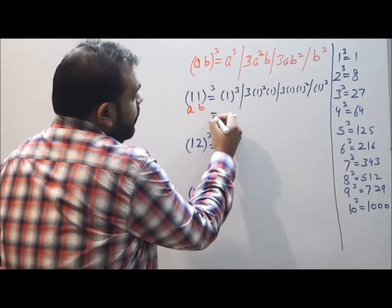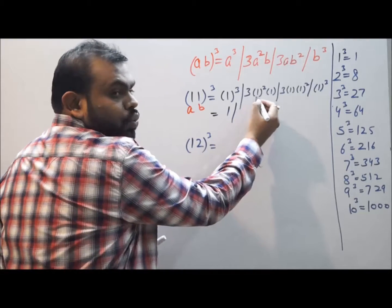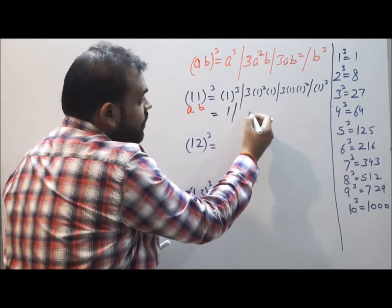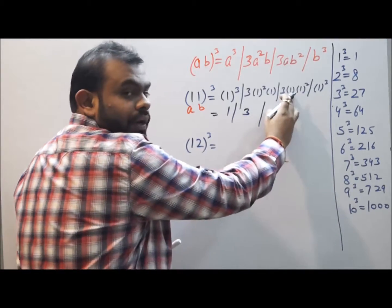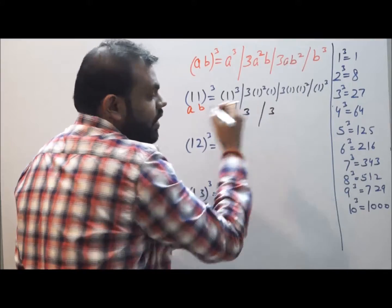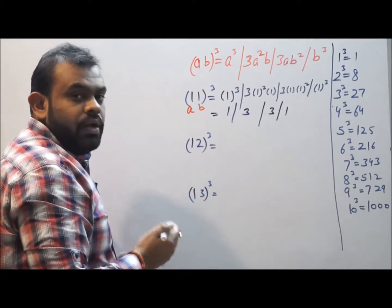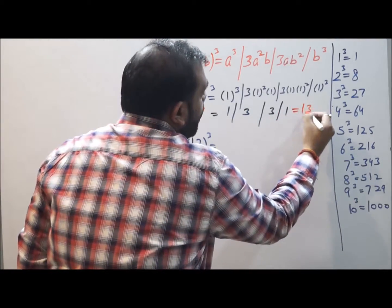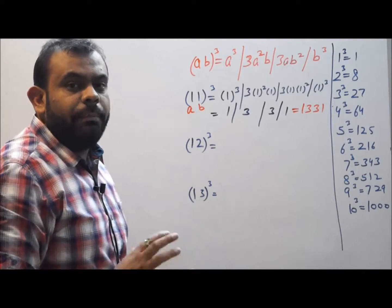1³ / 3(1²)(1) / 3(1)(1²) / 1³. Solving them, we get 1³ is 1, 3 × 1² × 1 = 3, again 3 × 1 × 1² = 3, and 1³ is 1. Removing the slashes, I can see that my answer is 1331.